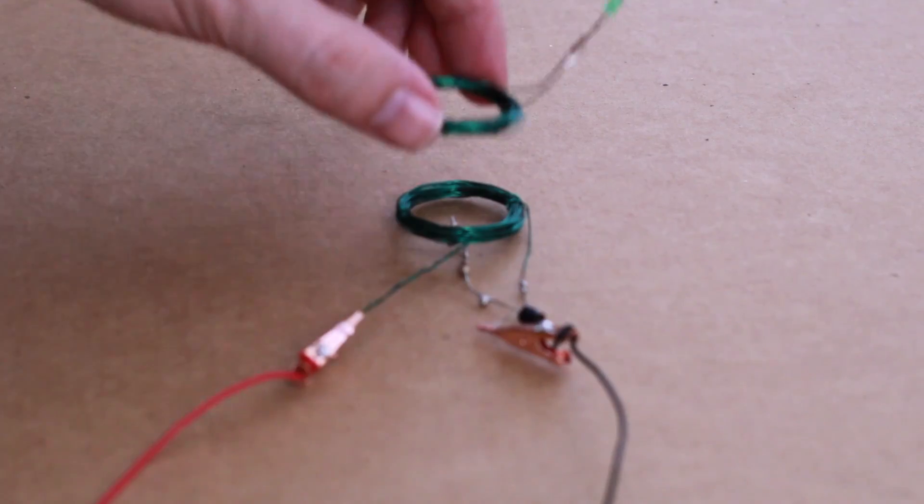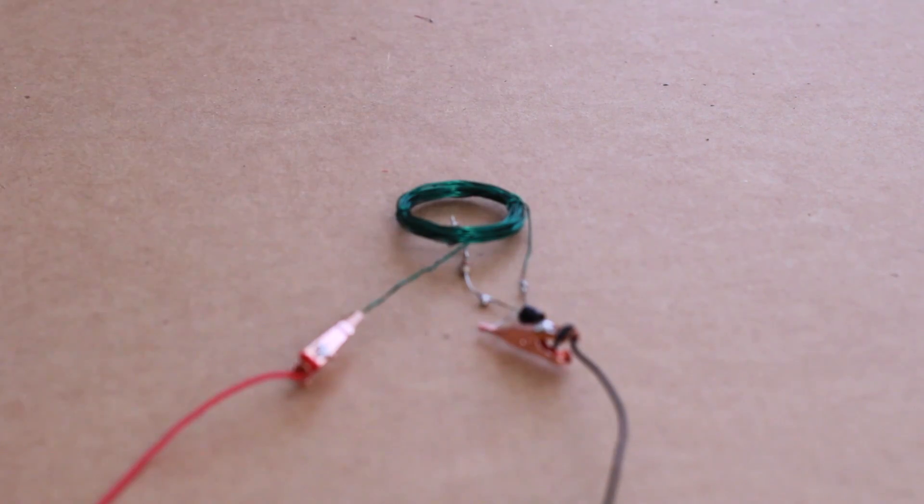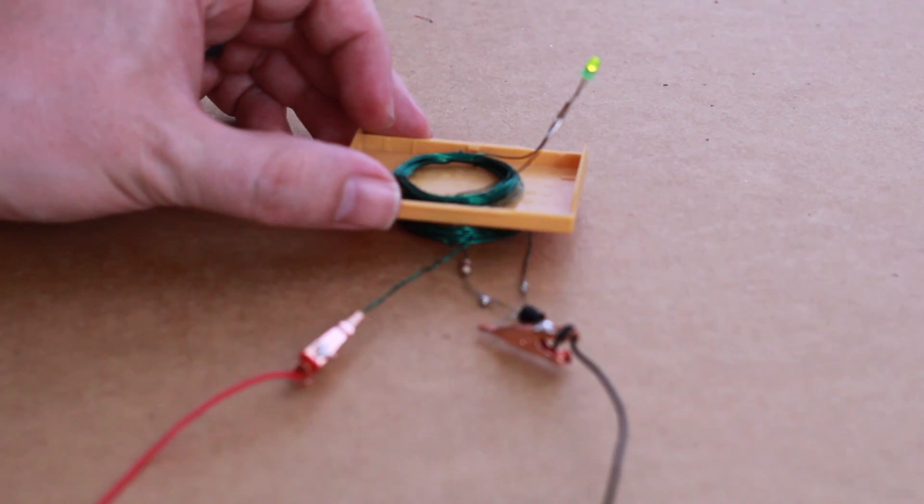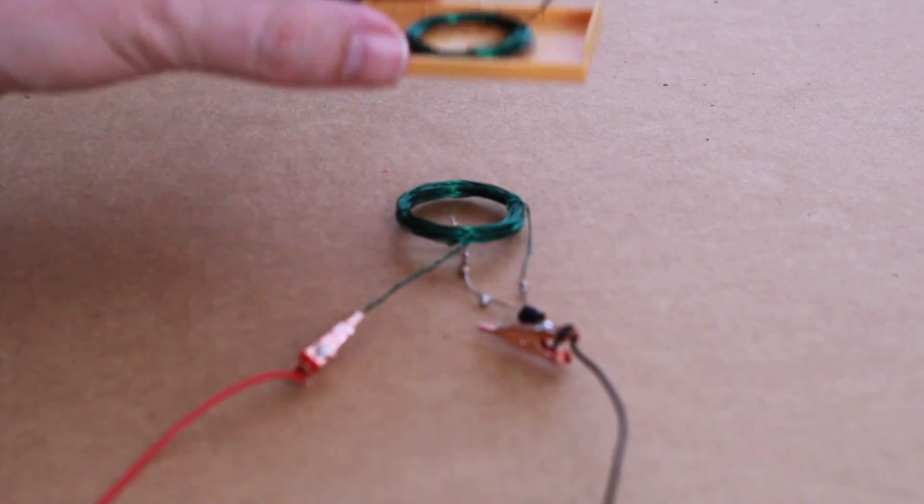So now if you take your receiving coil and place it within the electromagnetic field the LED should light up and the coils won't even have to touch. So there you have it, you've made your very first wirelessly powered LED.